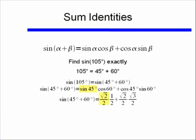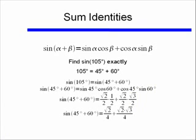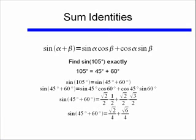The sine of 45 degrees is square root of 2 over 2, cosine of 60 degrees is 1/2, cosine of 45 degrees is also square root of 2 over 2, and sine of 60 degrees is square root of 3 over 2. We know this from our unit circle. Doing the multiplication gives us square root of 2 over 4, plus square root of 2 times square root of 3 over 4. Multiplying square root of 2 and square root of 3 gives square root of 6, so combining the fractions, the sine of 105 degrees exactly is square root of 2 plus square root of 6, all over 4.